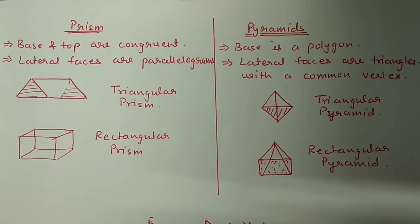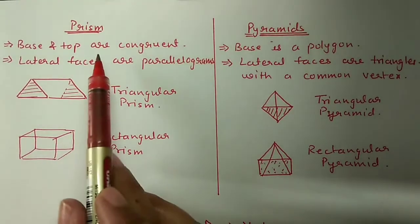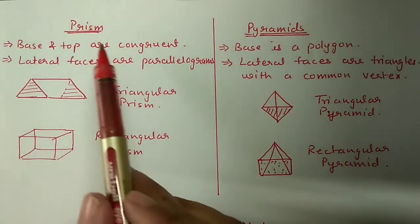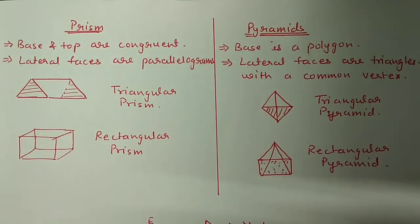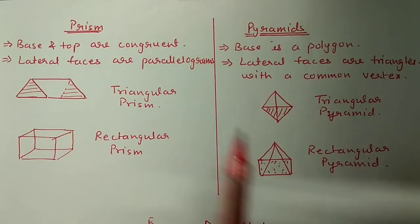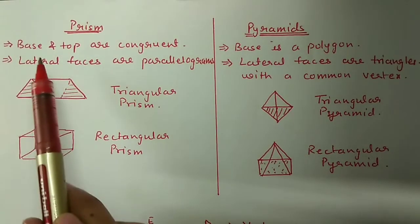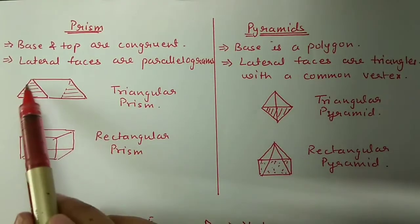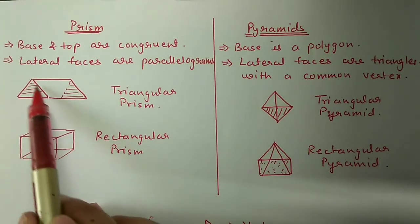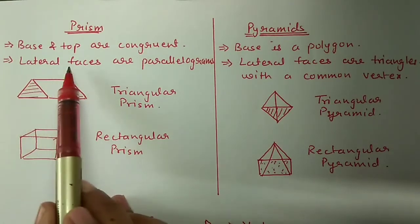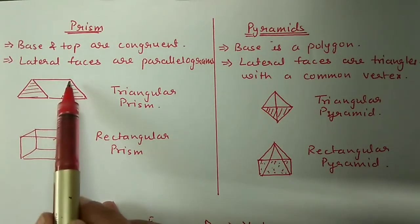Polyhedrons we will mainly consider here are prism and pyramid. In this exercise, 2 things we are covering: prism and pyramid. In a prism we are having a base and a top, and both base and top are congruent. The lateral faces will be parallelograms.